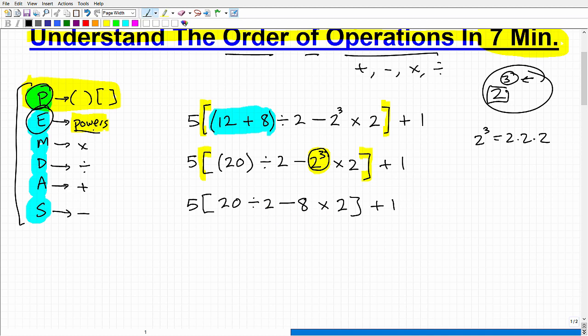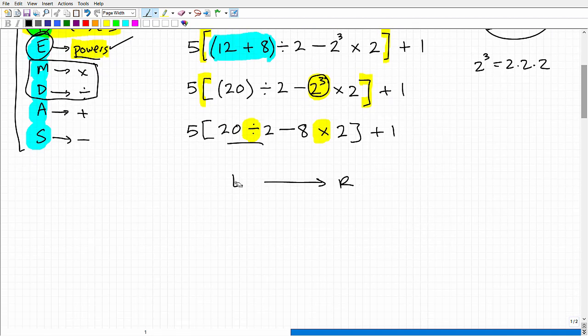So now I'm going to look around and ask myself, are there any more powers? Nope. So we got our parentheses done, did our powers. Now, let's consider multiplication and division. Do we have multiplication and division? Yes, we do. We have division here and multiplication here. But remember, we're going to do whatever comes first from left to right. So that means I'm going to do this first because this comes first before this. All right, so we're going to move this down. Okay, so let's go ahead and deal with 20 divided by 2. So I'll rewrite this 5 bracket. 20 divided by 2, of course, is going to be 10. So 10 minus 8 times 2 bracket plus 1.